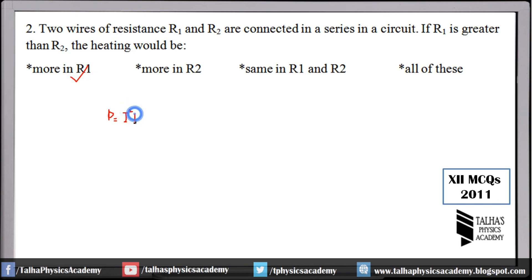The power formula gives us energy dissipation, and energy depends directly on resistance, not inversely. We use the I²R formula because current is constant in a series circuit. In contrast, if voltage were constant (as in a parallel circuit), we would use P = V²/R. Since current is constant here, greater resistance means greater power dissipation and therefore greater heating.